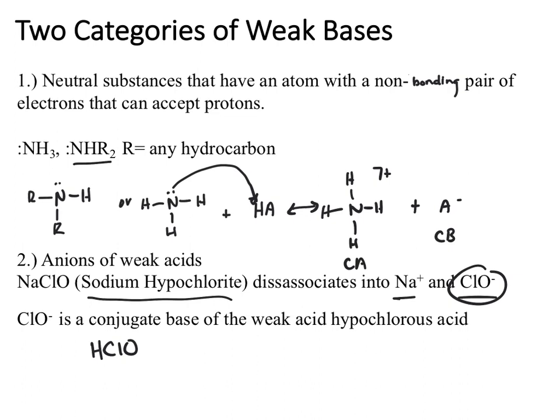When this acid dissociates, it produces a conjugate base and conjugate acid. These anions that are sourced from weak acids end up with the capability of behaving as bases in solution. When we put hypochlorite into solution, it behaves as a base.